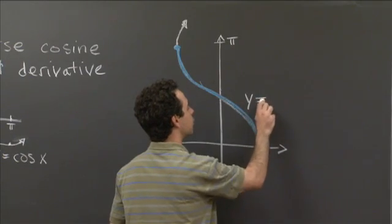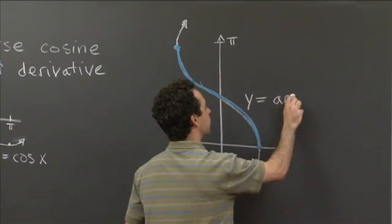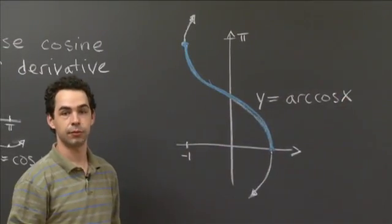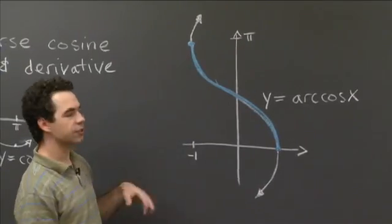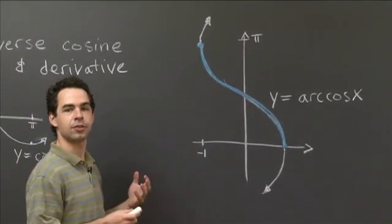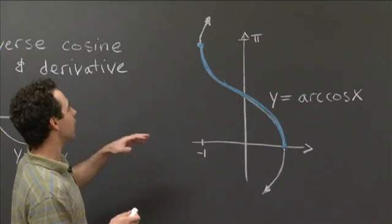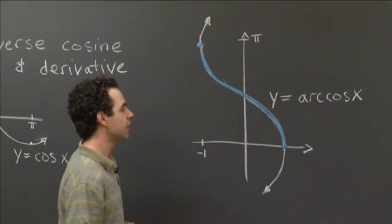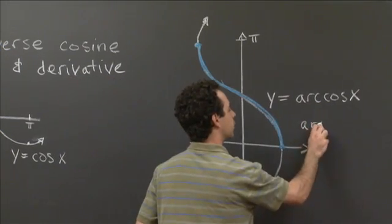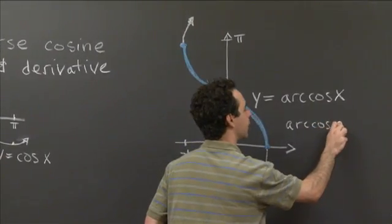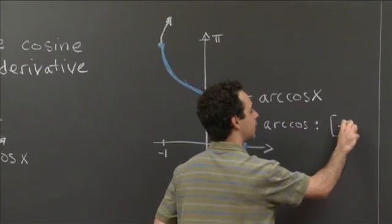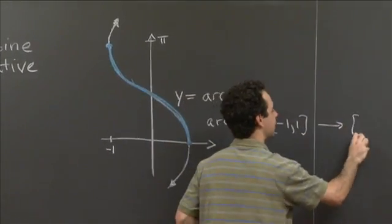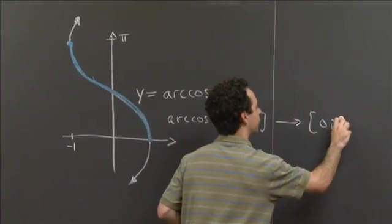So this curve is the graph of the function y equals arc cosine of x. And if you want, there's a notation that mathematicians use sometimes to show that we're talking about the particular arc cosine function that has this as its domain and this as its range. So we sometimes write arc cosine, and it takes its domain the values between minus 1 and 1.